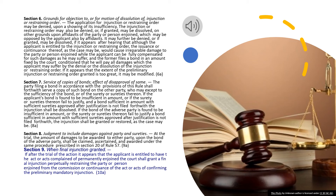or, if granted, may be dissolved, if it appears after hearing that although the applicant is entitled to the injunction or restraining order, the issuance or continuance thereof, as the case may be, would cause irreparable damage to the party or person enjoined while the applicant can be fully compensated for such damages as he may suffer, and the former files a bond in an amount fixed by the court conditioned that he will pay all damages which the applicant may suffer by the denial or the dissolution of the injunction or restraining order. If it appears that the extent of the preliminary injunction or restraining order granted is too great, it may be modified.